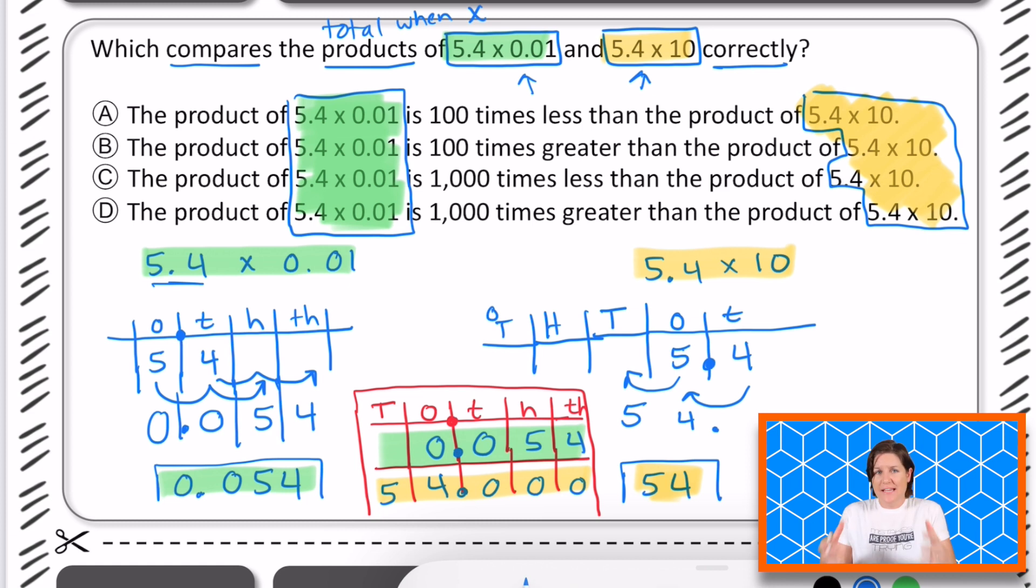So as you can see the green one, 54 thousandths, is that less than or greater than 54? It's less than, right? So here where it says that this one, the product of 5.4 times 0.01 is 100 times less. See how it says 100 times less. We'll see how many times less in a second, but less works out.